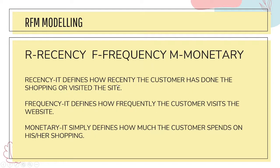The factors we are going to use to divide customers into different groups come from RFM modeling, which consists of three factors: Recency, Frequency, and Monetary. Recency is how recently a customer has visited the website — for example, within the last month or last week. This shows the connection of the customer with the website.